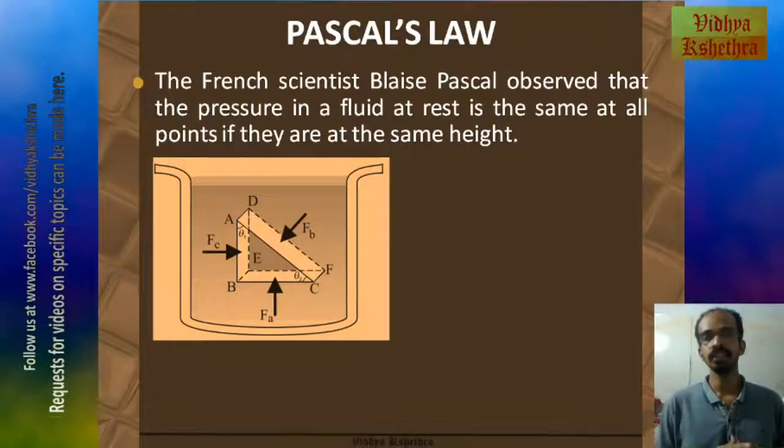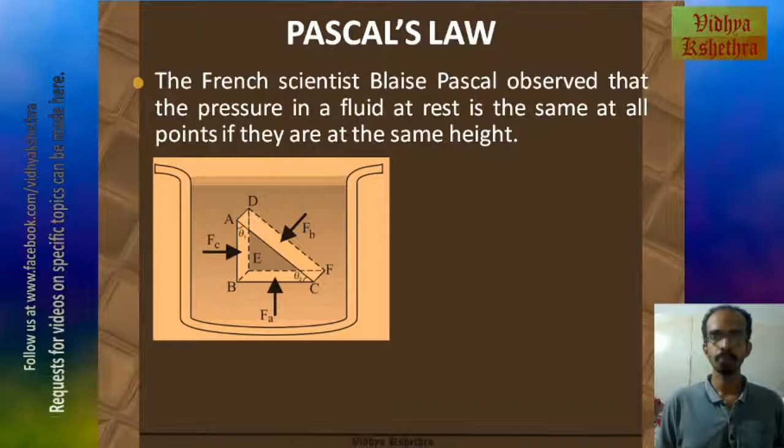For that we can consider a very small prismatic object inside a fluid filled container. In this case, the force of gravity at the points B, C, F, E are considered to be the same, since the prismatic object is small and the force experienced by the prismatic object is basically due to the fluid at rest which is acting normal to the surfaces of the prismatic object.